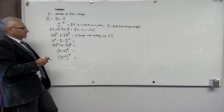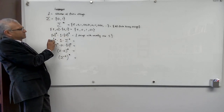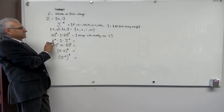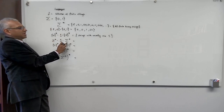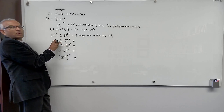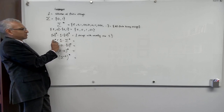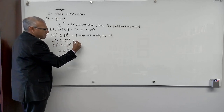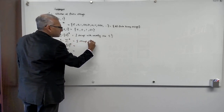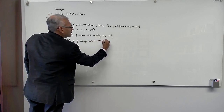Now sigma-star concatenated with one concatenated with sigma-star: sigma-star is any string, followed by one, followed by any finite string. These are all the strings with at least one '1', because sigma-star could be empty on either side.